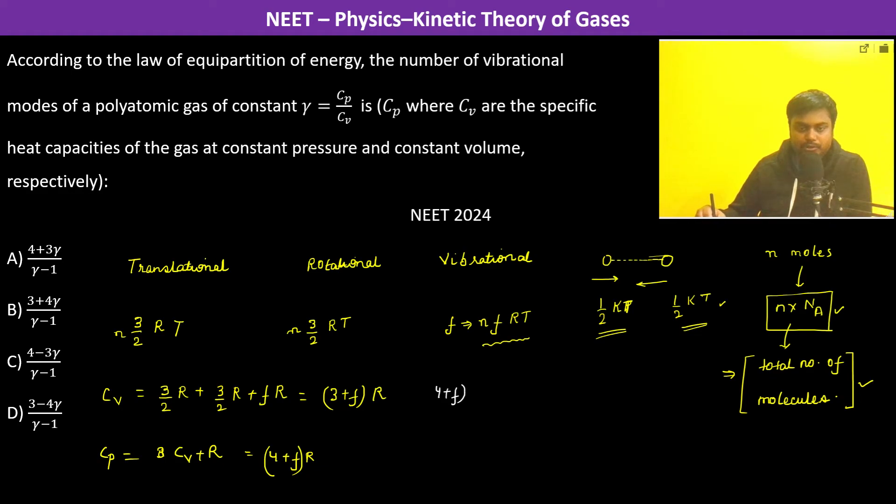4 plus F into R divided by 3 plus F into R, this is going to be gamma. R is cancelled. Therefore 4 plus F is equal to 3 gamma plus F gamma, implies F is equal to 4 minus 3 gamma divided by gamma minus 1. So the answer is going to be option C.